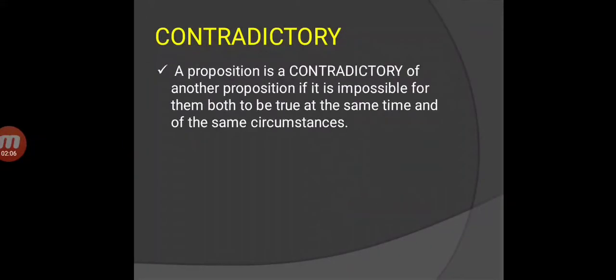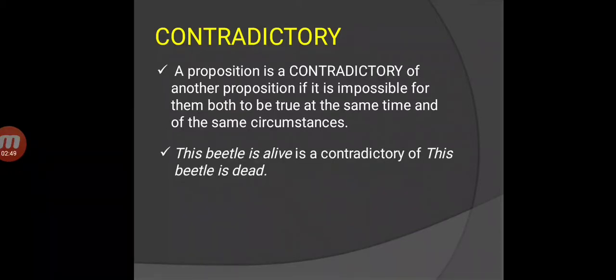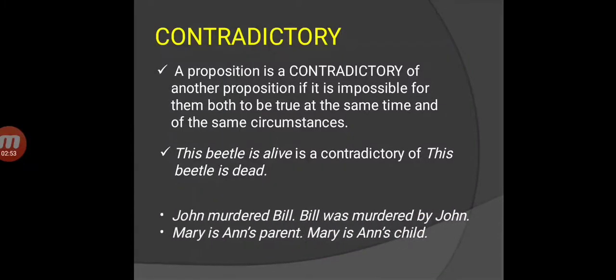A proposition is contradictory of another proposition if it is impossible for them both to be true at the same time and of the same circumstances. Alternatively, a sentence contradicts another sentence if it entails the negation of the other sentence. For example, this beetle is alive is contradictory of this beetle is dead. For practice, let's say whether the following pairs are contradictory or not. John murdered Bill and Bill was murdered by John - no. Mary is Anne's parent and Mary is Anne's child - yes, they are contradictory as they are different.